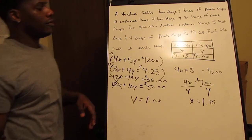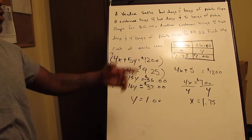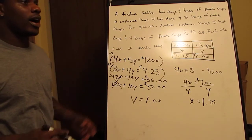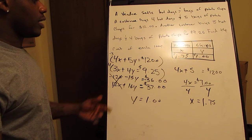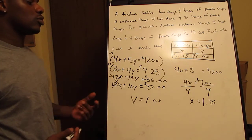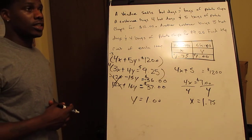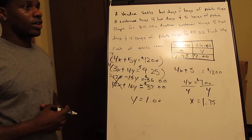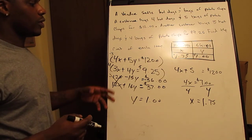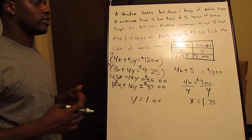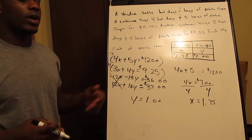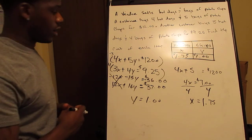So we've solved for both X and Y. You can always verify by substituting back into the equation, and you'll still get X equals $1.75 and Y equals $1.